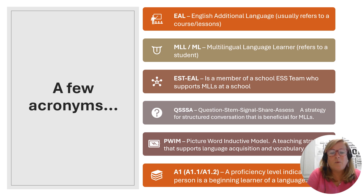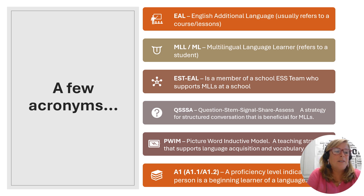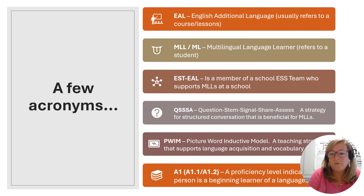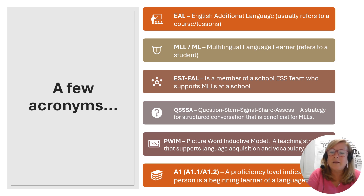A1, A1.1, and A1.2 is a proficiency level from the Common European Framework of Reference, CEFR. This would be the very beginning stages of learning a language. Once the student masters the outcomes at this level, they would move on to A2, then B1, followed by B2, C1, and then C2.